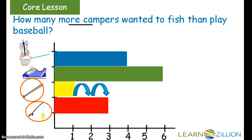How many numbers would I have to jump to get from the number of campers that wanted to play baseball to the number of campers that wanted to go fishing? One, two — so I would have to do two jumps to get to that number. So two more campers wanted to fish than play baseball.